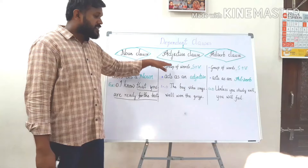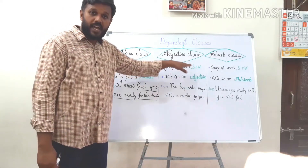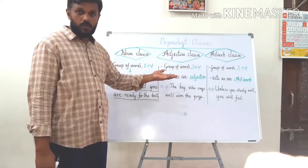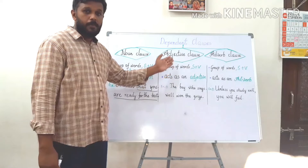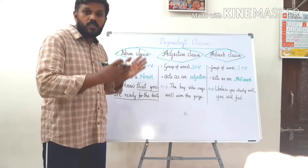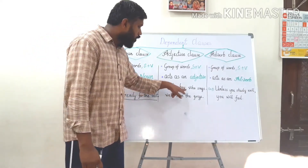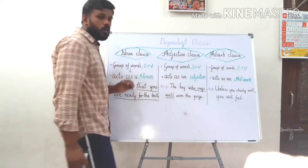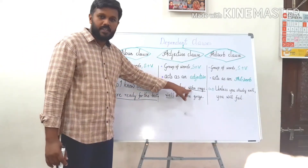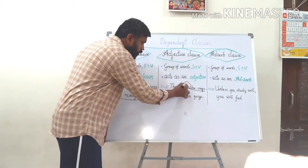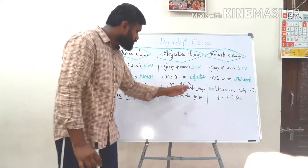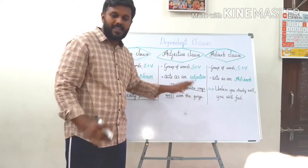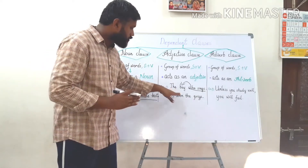Adjective clauses are also a group of words which have a subject-verb combination, and they act as an adjective — they qualify a noun. An example: 'The boy who sings well won the prize.' Here 'who sings well' uses a relative pronoun 'who' which tells about the boy and stands instead of the boy. It tells about the quality of the boy. 'The boy won the prize' is the main clause — the independent clause — and 'who sings well' qualifies the subject 'the boy.'